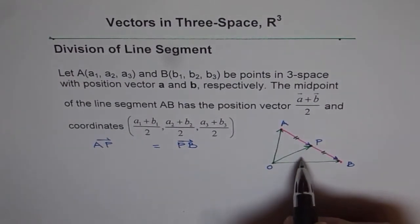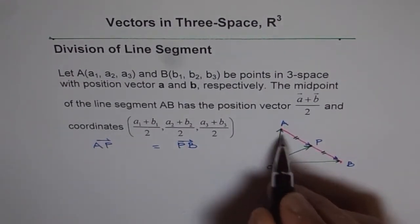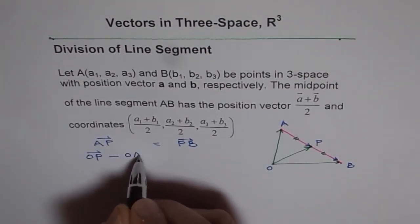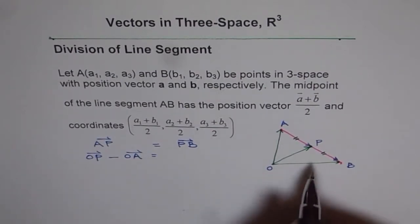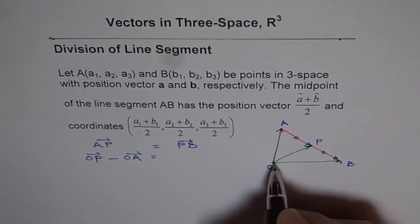Now what is AP? AP is OP minus OA. So we can write AP as OP minus OA. Similarly, what is PB? PB will be OB minus OP.